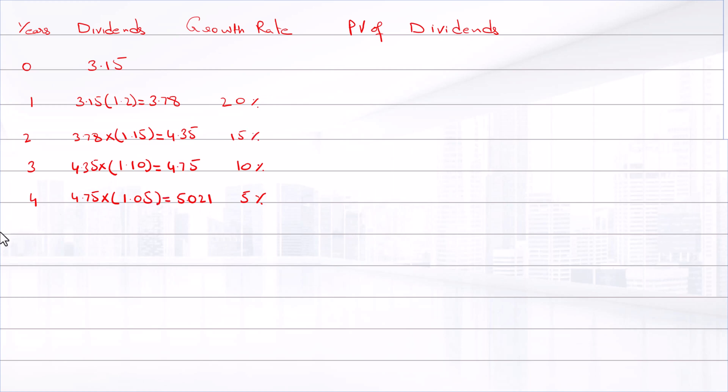We know that the required rate of return is 12%. To calculate the present value, 3.78 divided by 1.12 raised to power 1, that is equal to $3.375.